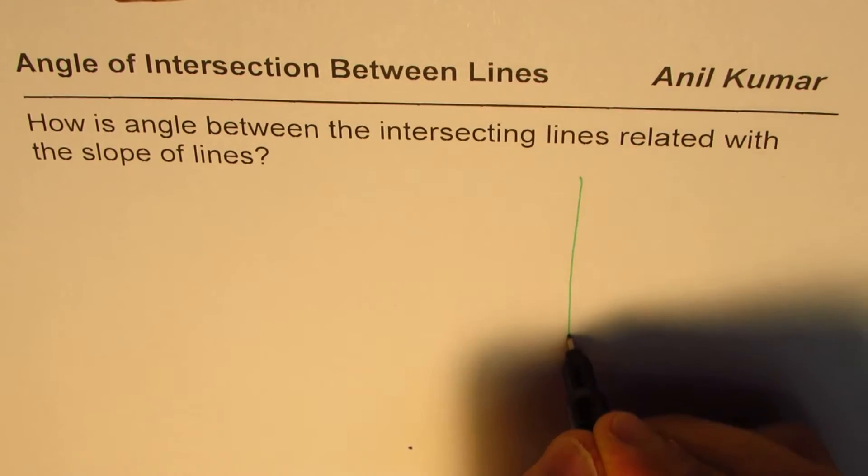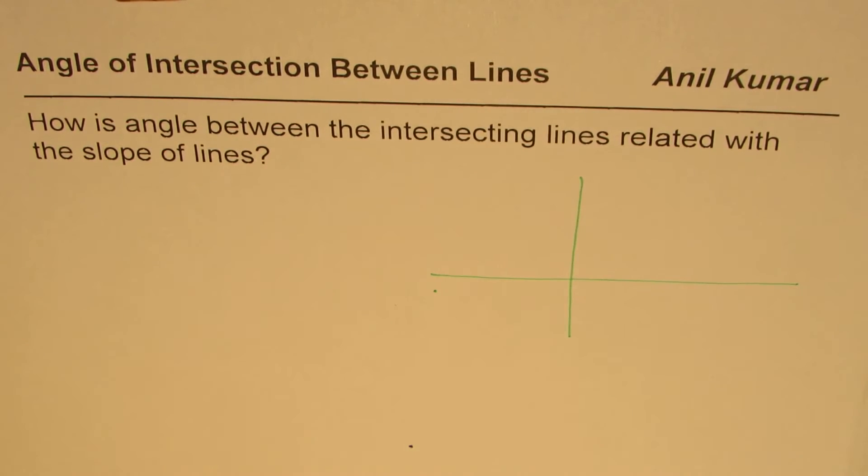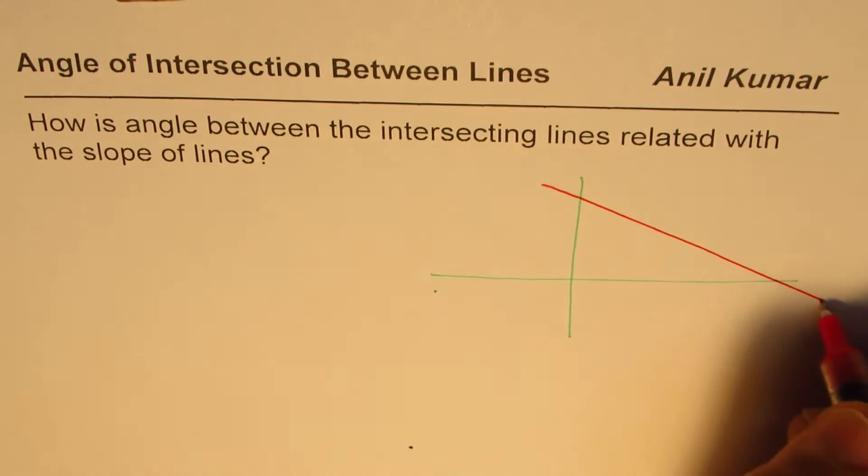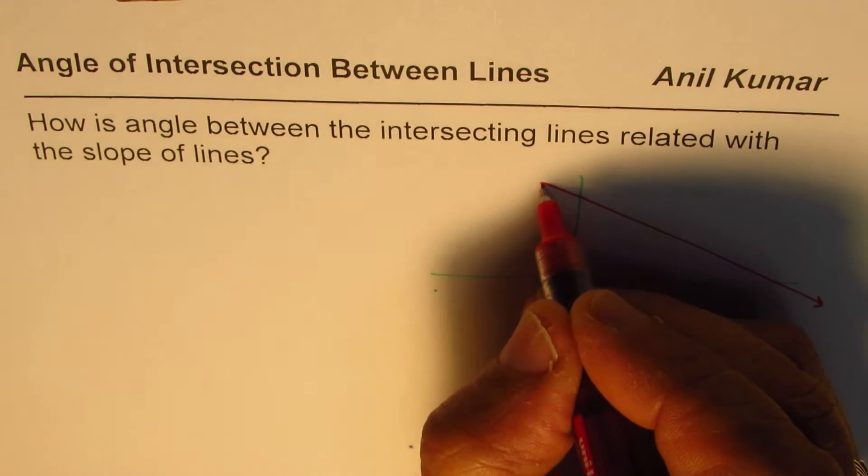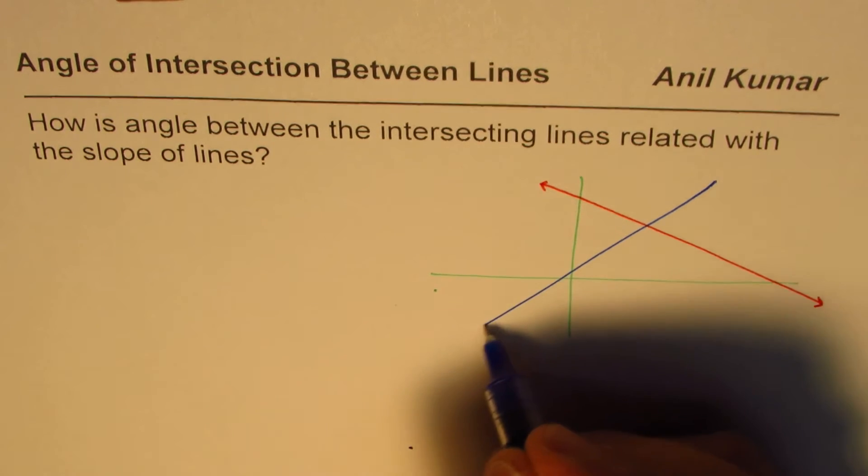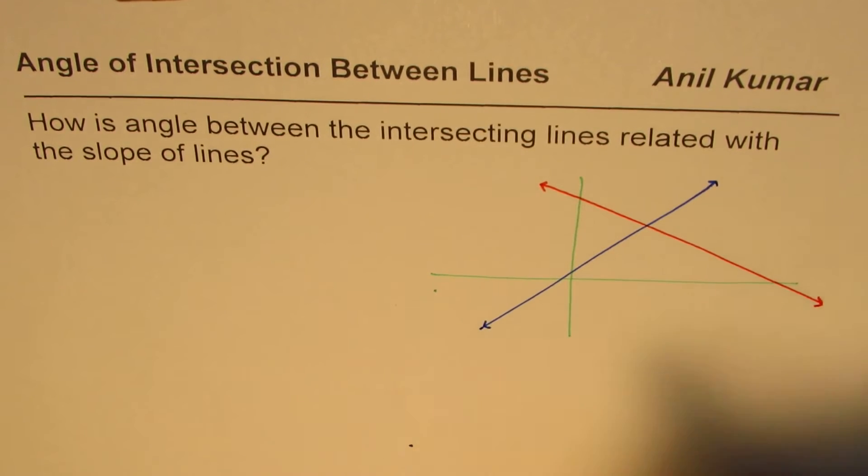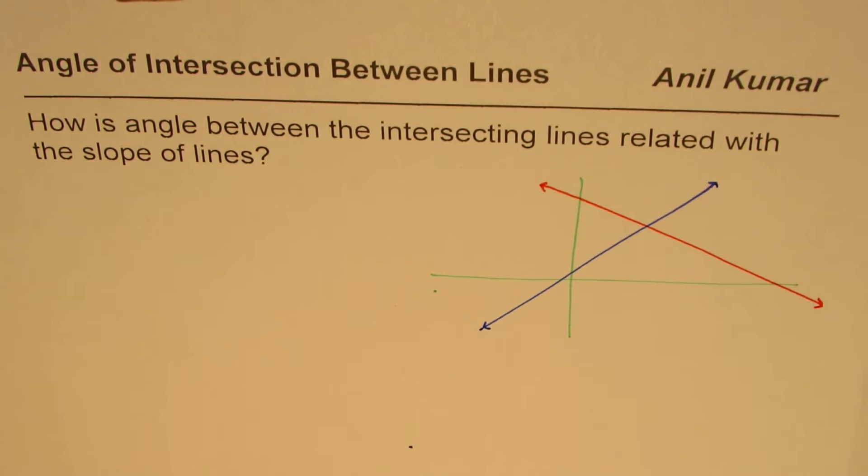So let us take up a general example. I will just sketch two lines. Let us say first line is kind of like this and the other line is kind of like this. So these are the two lines and we need to find the angle of intersection.